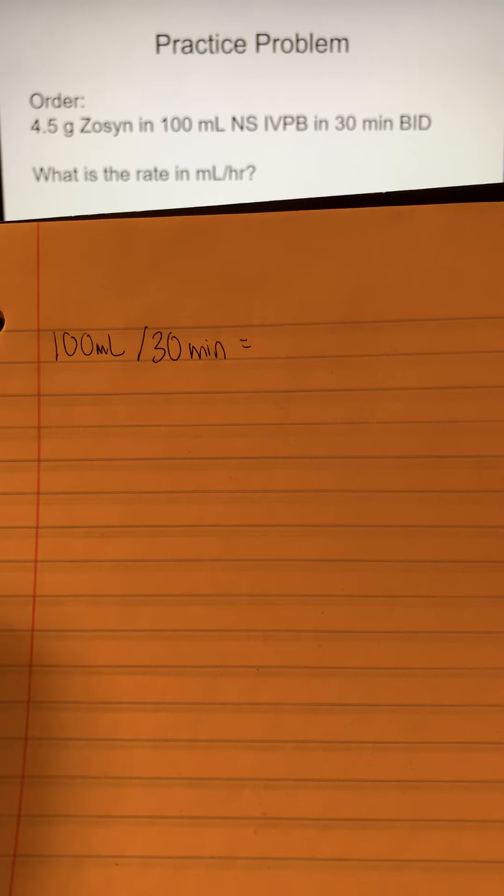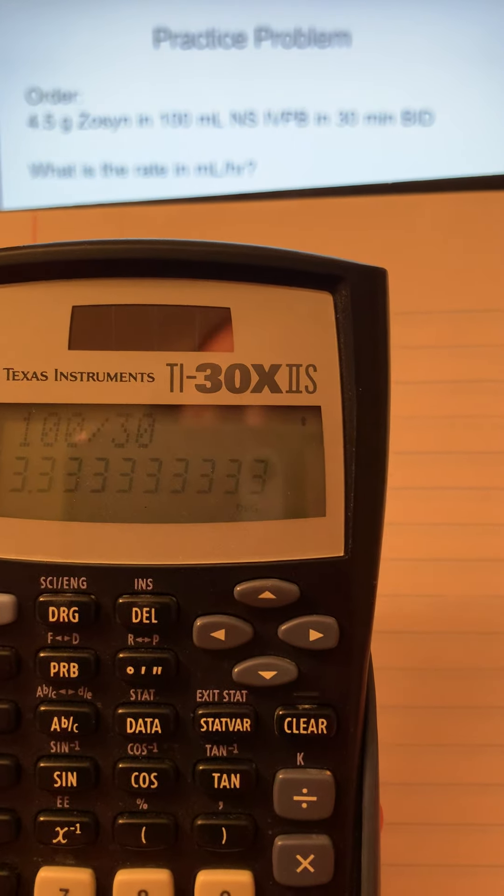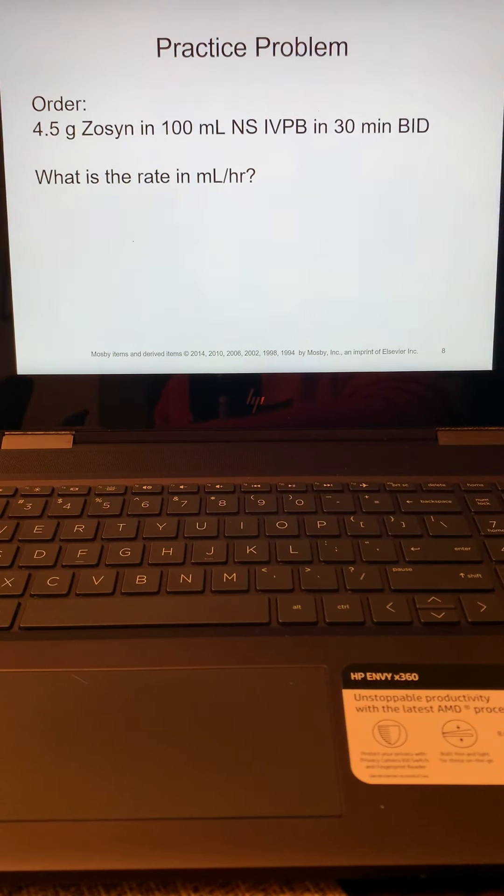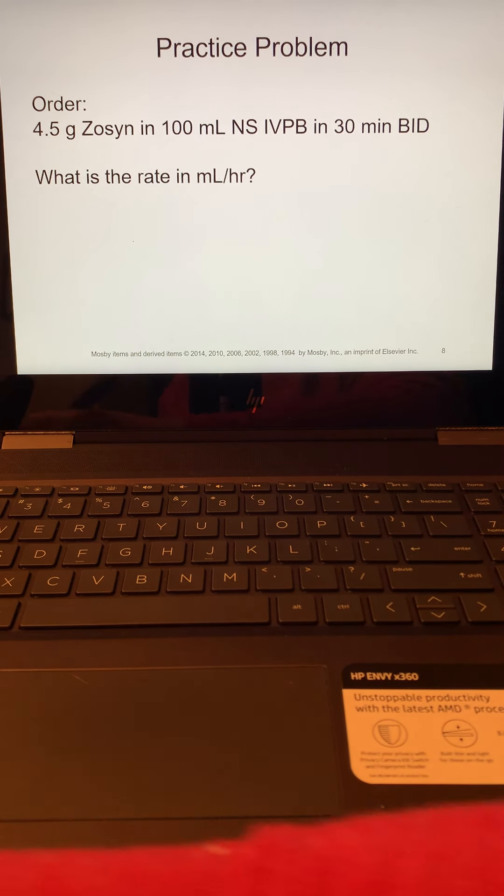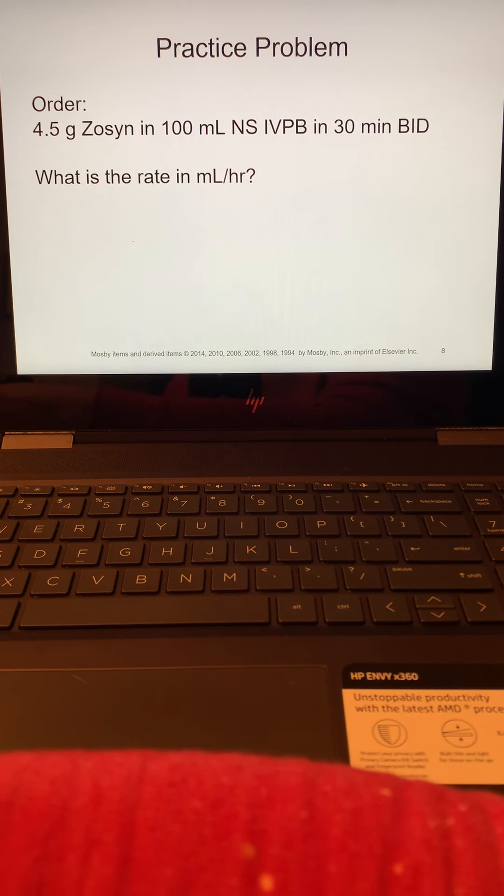So you can do this a couple of different ways to find out your milliliters per hour. You can do 100 divided by 30, and that will tell you how many milliliters per minute. So then you would multiply that by 60 to get your milliliters per hour. So 200 milliliters per hour. That's a pretty easy way to do it. Let me write this down and then I'll show you so you can take a screenshot if you need to. So 100 milliliters divided by 30 minutes, you're going to get 3.33, and then you're going to multiply that by 60 minutes to get 200 milliliters per hour. In case you need to take a screenshot of that. That is how you would do that calculation.